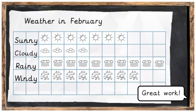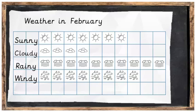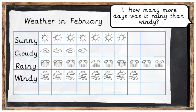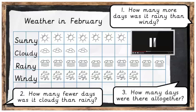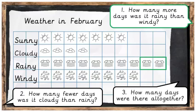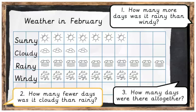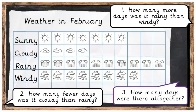Great work! From our pictogram we can get lots of information. Let's see if you can answer these questions. Question one: how many more days was it rainy than windy? Question two: how many fewer days was it cloudy than rainy? Question three: how many days were there altogether? For question one, there were two more rainy days than windy days. For question two, there were six fewer cloudy days than rainy days. For question three, if you count up all the pictures you will find there were 29 days altogether — so it must have been a leap year!